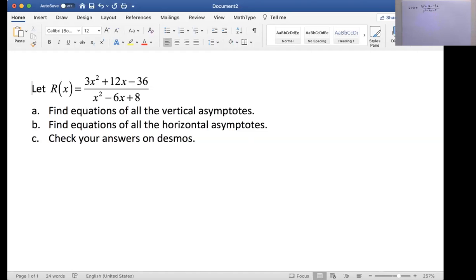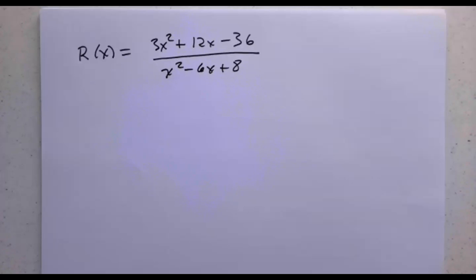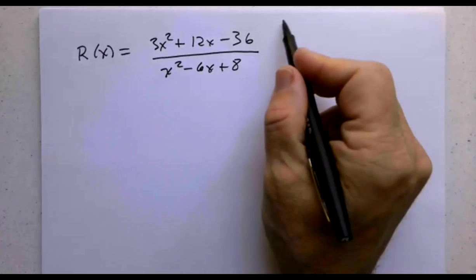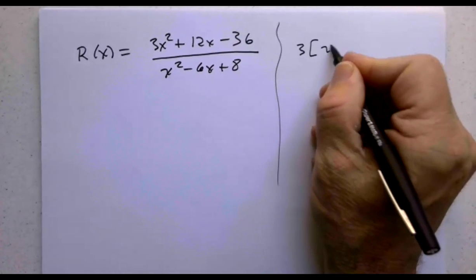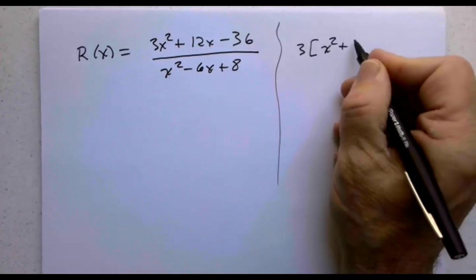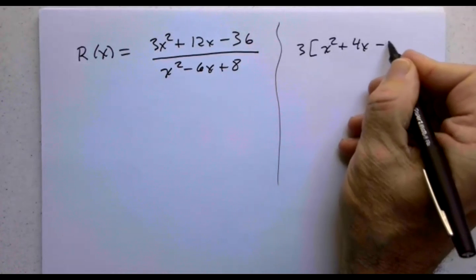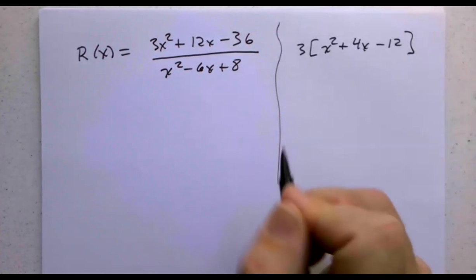The first thing I want to do is find the vertical asymptotes. To do that we're going to need to factor. Let's factor the numerator and factor the denominator. The numerator I can extract a 3 and I'm left with x squared plus 4x minus 12.